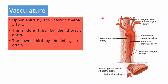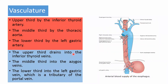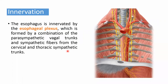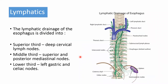Vasculature of the esophagus: the upper third is supplied by the inferior thyroid artery; the middle third by branches from the thoracic aorta; the lower third by the left gastric artery. Venous drainage: the upper third drains into the inferior thyroid veins; the middle third into the azygos veins; the lower third into the left gastric vein, a tributary of the portal vein. Innervation is by the esophageal plexus formed by parasympathetic vagal trunks and sympathetic fibers from the cervical and thoracic sympathetic trunk. Lymphatic drainage: the superior third drains to deep cervical lymph nodes; the middle third to superior and posterior mediastinal nodes; the lower third to the left gastric and celiac nodes.